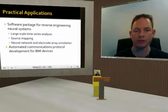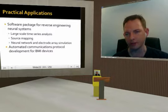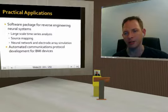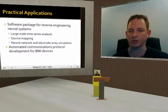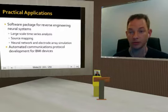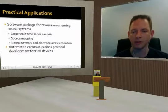Another idea for practical applications is that if you can automatically emulate a given network of neurons, you might be able to do automation of communications protocols for BMI devices. The obvious targets would be sensory systems right now — things like cochlear implants — but possibly other systems as well.